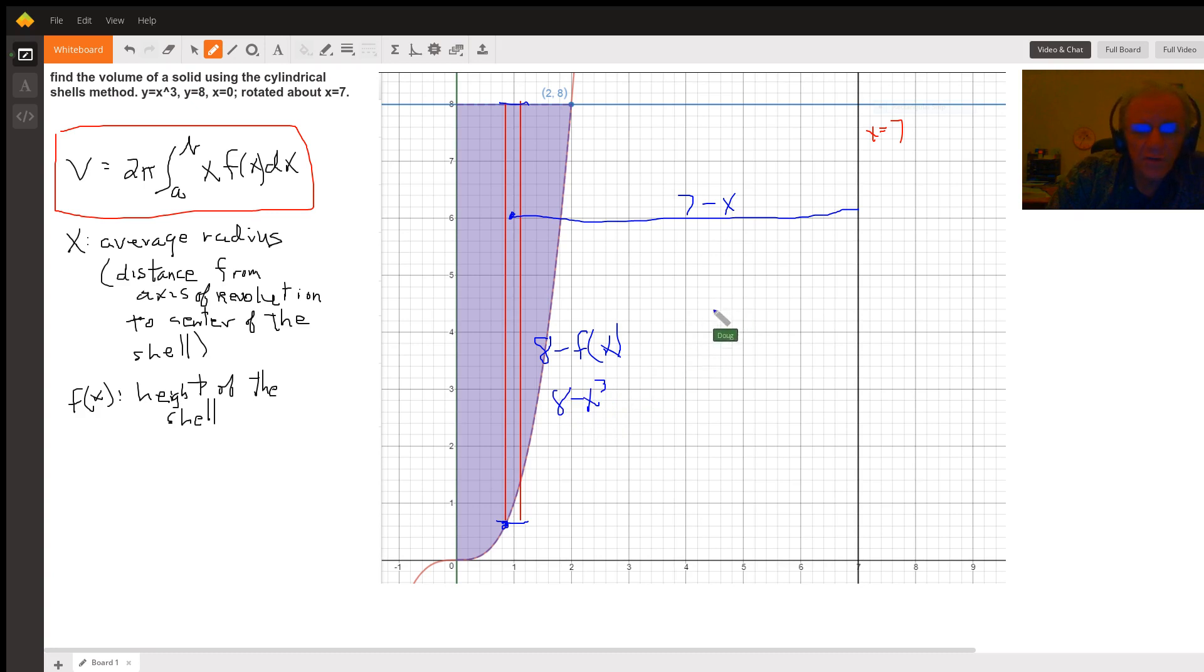So, the integral looks like this. We could put the 2 pi out front. We're integrating from 0 to 2. The average radius is 7 minus X. The height is 8 minus X cubed. And the thickness of the shell, which is this distance right here, is represented by DX.